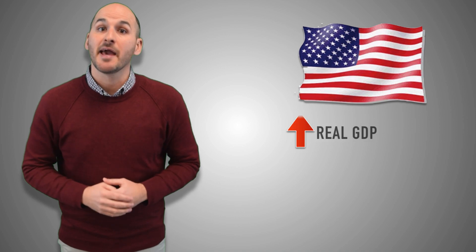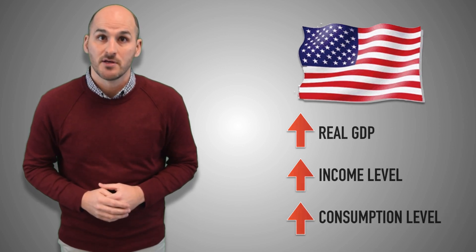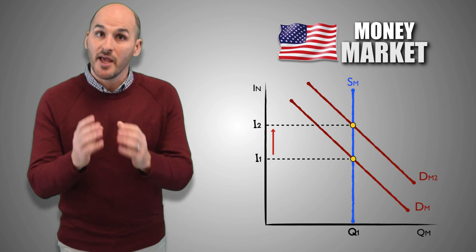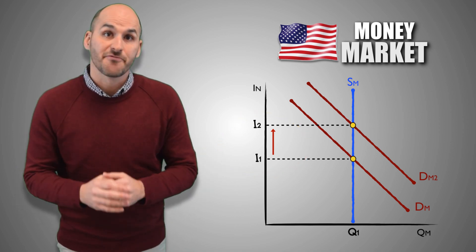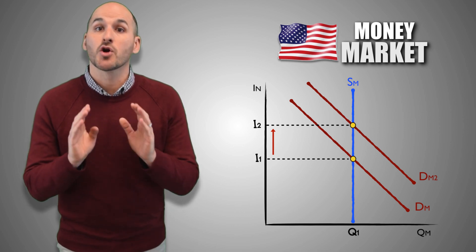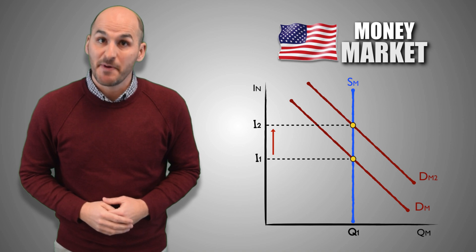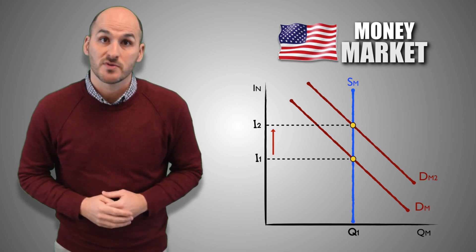For example, suppose the United States experiences economic growth and real GDP output increases. As employment increases, consumers have more disposable income and purchase greater quantities of real GDP output. This increase in consumption leads to an increase in the demand for money, causing the nominal interest rate to increase. However, because the Federal Reserve controls the money supply, the quantity supplied does not change. This higher nominal interest rate means borrowing is more expensive, so firms reduce their investment spending, causing aggregate demand to decrease.